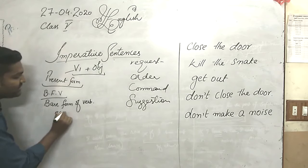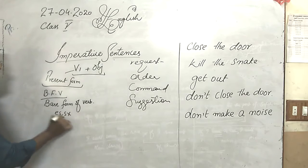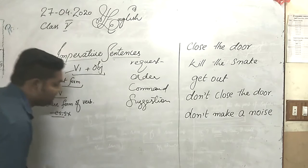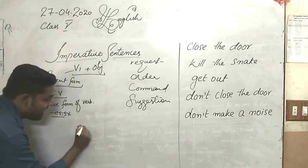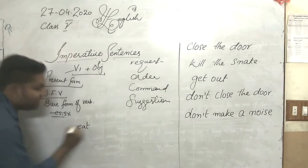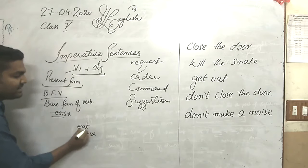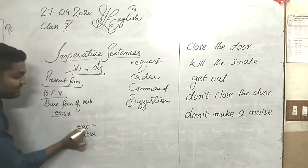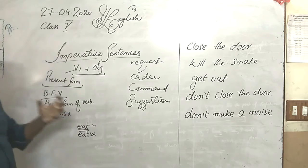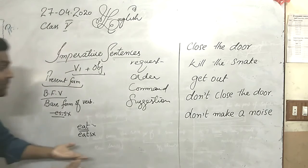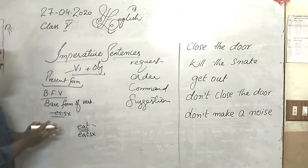We do not use 'es' or 's' with the verb. For example, we write 'eat' — we do not write 'eats'. 'Eats' is incorrect and 'eat' is correct. So this is the base form of the verb. The question is: why do we always use the base form of verb? Why do we not use 'es' or 's'?